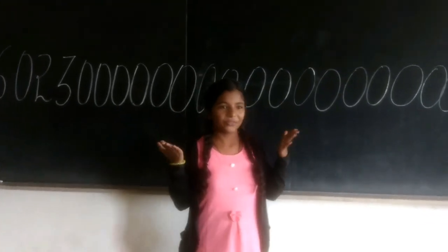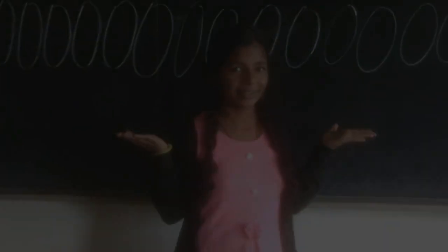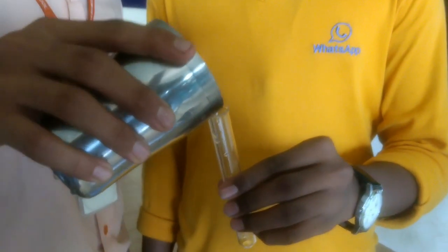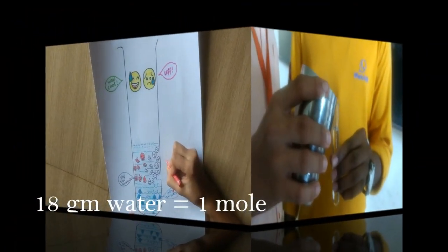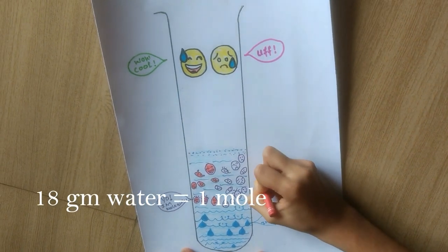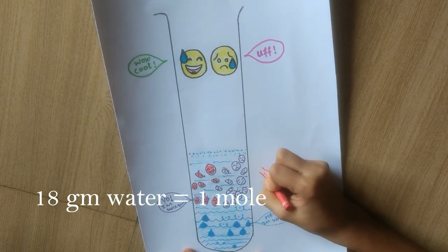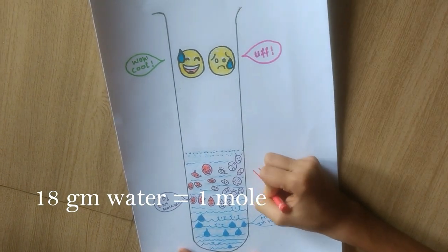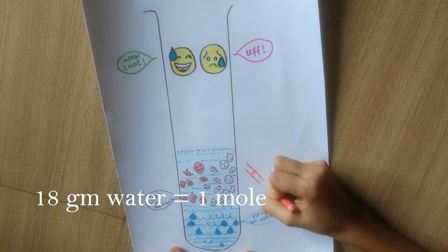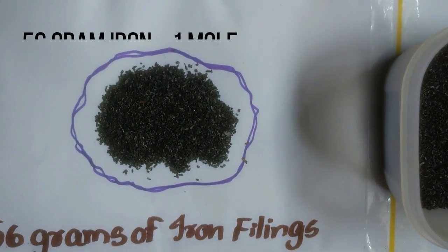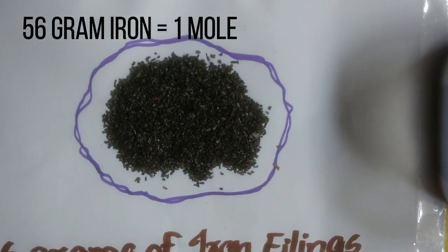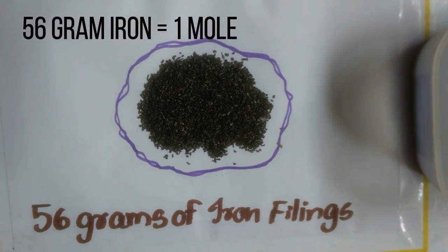But how much is one mole? 18 grams or 18 milliliters of water has 6.023 into 10 to the power 23 water molecules, or 18 grams of water is one mole. 15 grams of iron filing contains 1 mole of iron atoms.